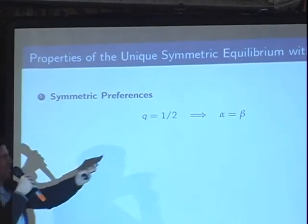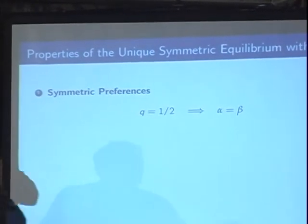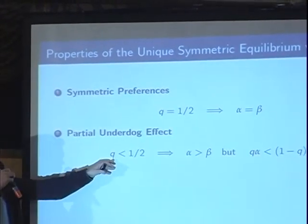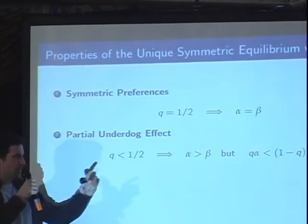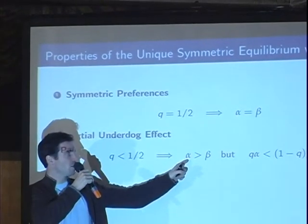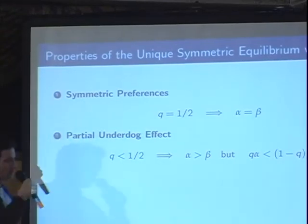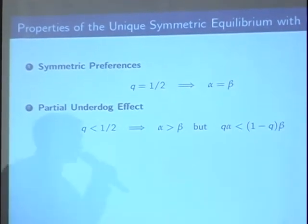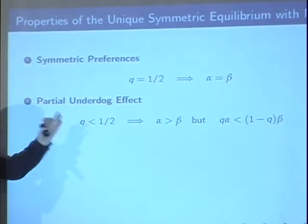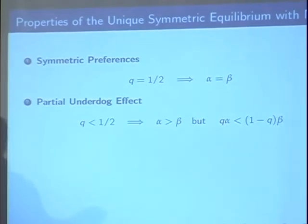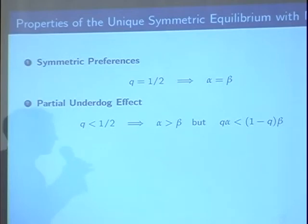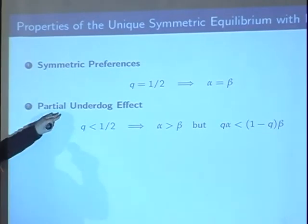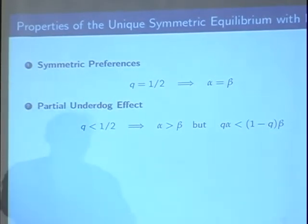Suppose without loss of generality party A is the minority. The minority turns out at a larger percentage than the majority — but that's not enough to overcome the initial preference disadvantage. So if you have 30 vs. 70 percent ex-ante preferences, ex-post the vote might be 40-60 instead. The minority turns out more. We call this a partial underdog compensation effect — it's partial, not full.